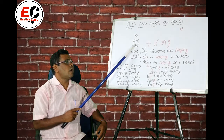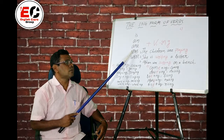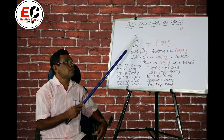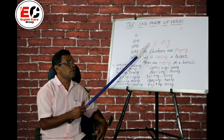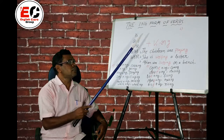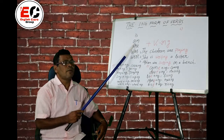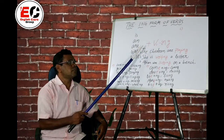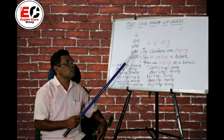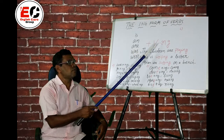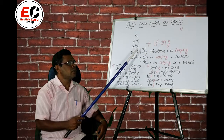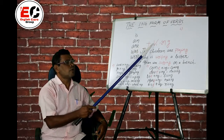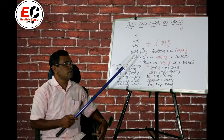Is, am, are, was, were. Is plus verb plus ING. Am plus verb one plus ING. Was plus verb one plus ING. Were plus verb one plus ING.